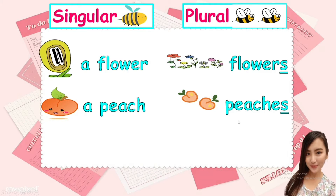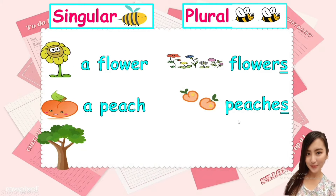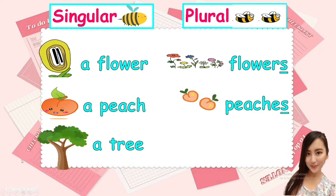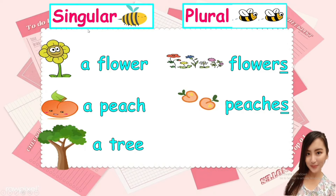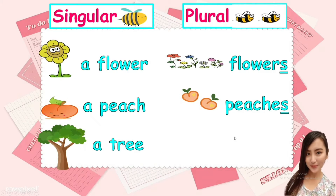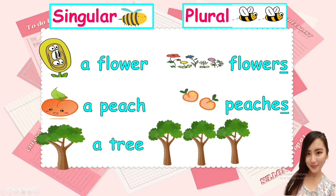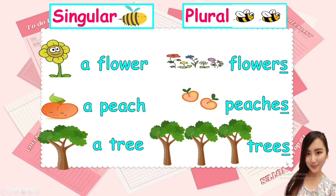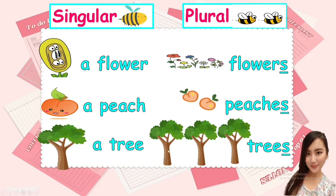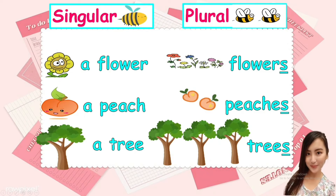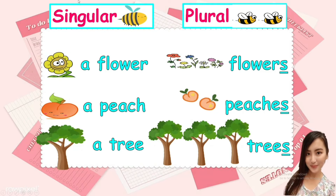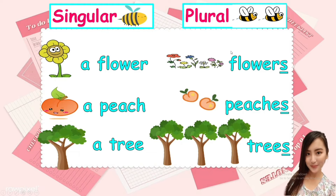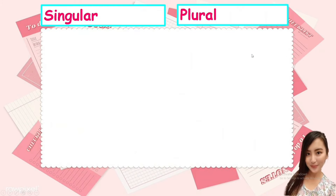Singular. Plural. Another example. A tree. This tree, it's only one, that's why it's singular. And there are three trees. We say trees, and this is plural because there are one, two, and three. Remember, singular means only one, and plural refers to more than one.